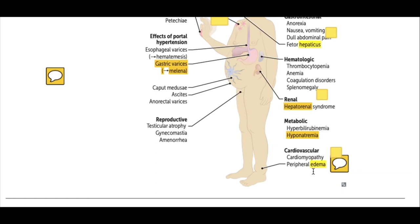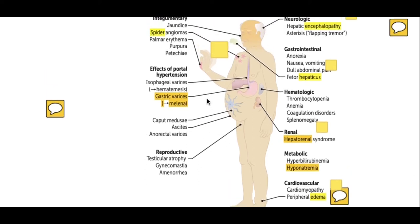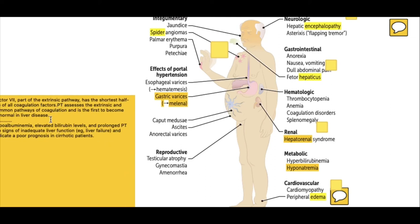Peripheral edema in liver cirrhosis is due to hypoalbuminemia. One of the liver's functions is to produce albumin, and when albumin levels decrease, fluid leaks from blood vessels into the interstitial spaces. In the reproductive system, liver cirrhosis causes testicular atrophy, gynecomastia — abnormal enlargement of the chest in males — and amenorrhea, which is the absence of menses in females.